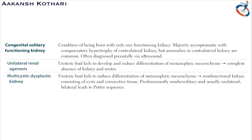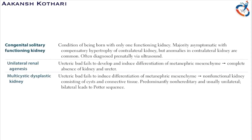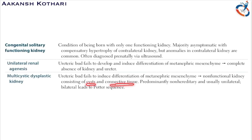In multicystic dysplastic kidney, the ureteric bud again fails to differentiate with the metanephric mesenchyme. The result is a non-functional kidney consisting of only cysts and connective tissue. It is predominantly non-hereditary and occurs in only one kidney. If both kidneys have cysts and connective tissue, it can lead to Potter sequence.